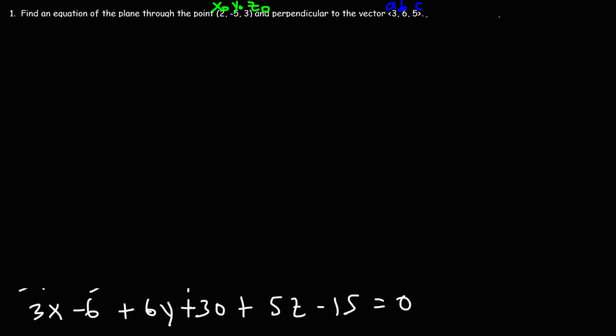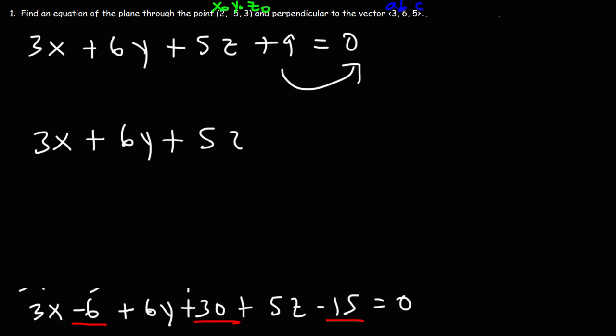Now the next thing we need to do is we need to combine like terms. So 30 minus 15, that's 15. 15 plus negative 6 is 9. So we have 3X plus 6Y plus 5Z and then plus 9. I'm going to take the 9 and move it to the other side. So we have 3X plus 6Y plus 5Z and that's equal to negative 9.